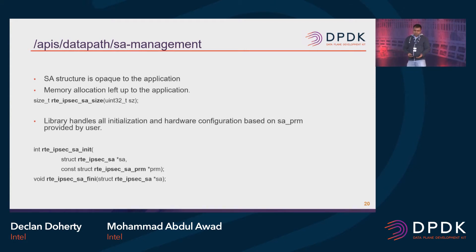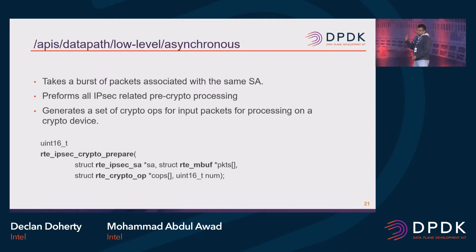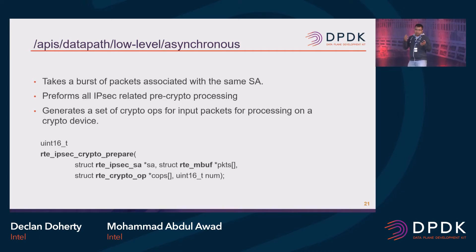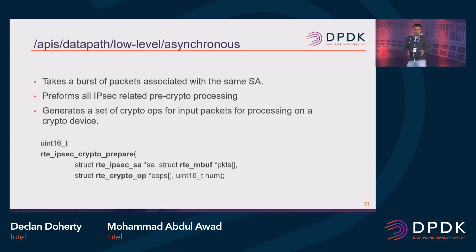Based on those parameters, the SA is initialized and we're ready for data path processing. For asynchronous mode, like look-aside crypto, we have a bunch of packets associated with an SA, and it does all the crypto operations - encryption, decryption, and all the header-related operations, adding or stripping the header. We have this API called IPsec_crypto_prepare. What it does is it takes the SA and a bunch of packets, and then prepares the crypto ops. Based on the SA params, it prepares all those crypto ops, filling up all the crypto functions ready for the look-aside crypto operations.